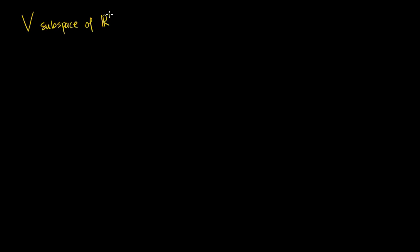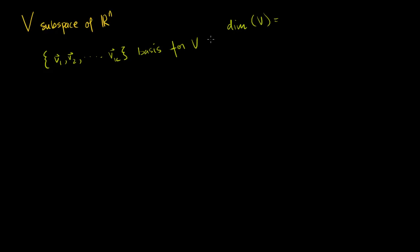Let's say I've got some subspace of Rn called V, so V is a subspace of Rn, and let's say that I know its basis — the set of vectors v1, v2, all the way to vk. That means these vectors both span V and they're linearly independent; it's the minimum set of vectors in Rn that span V. So the dimension of V is just the number of vectors in the basis, which is k.